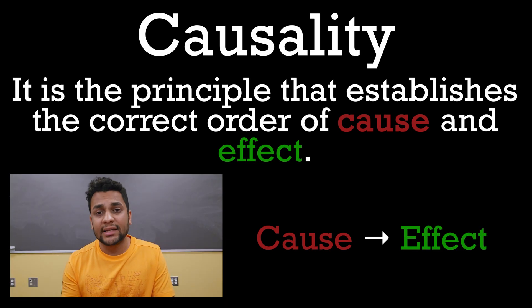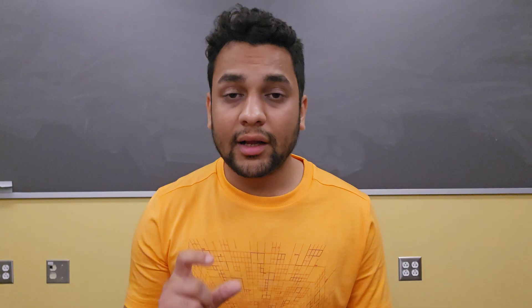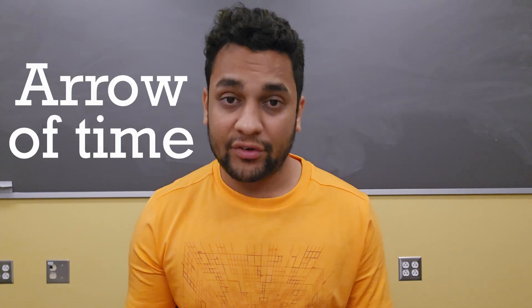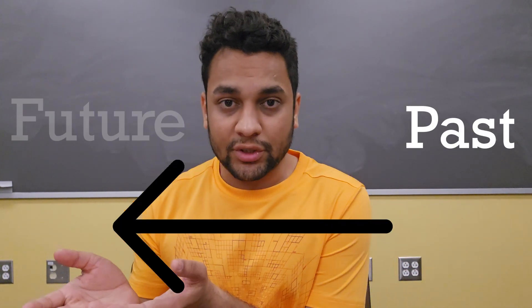Cause precedes its effect. Someone throws a ball at you and you catch it — a concept so innate that we often take it for granted. But have you ever thought of catching a ball before it is even thrown? Even the question sounds absurd. This is because of another bound of physics known as causality. I believe causality stands as a fundamental bound on the laws of physics, enforcing the correct order of cause and effect. A closely related topic is the arrow of time, which takes us from the past to the future and never in the opposite direction, except for sci-fi movies and books.